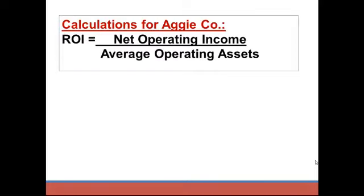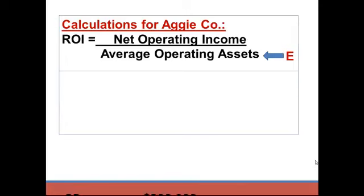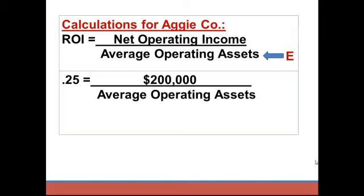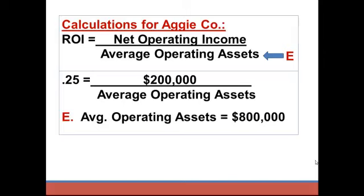Now to solve for letter E — the average operating assets — we'll use the formula: ROI equals net operating income divided by average operating assets. We'll take the 25% ROI we calculated, and income is given as $200,000. Solving algebraically for average operating assets, we get $800,000 — that is $200,000 divided by 0.25. That's the answer to letter E.